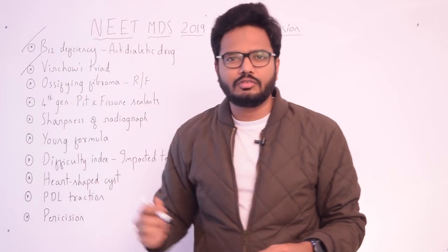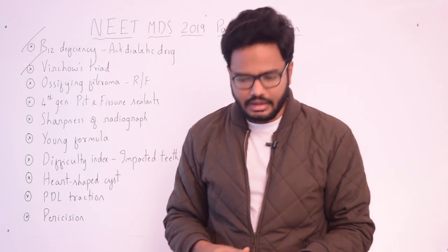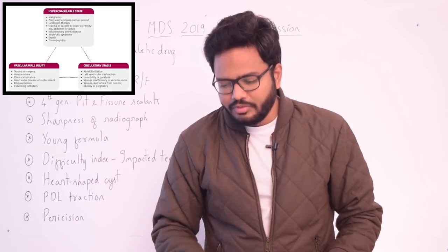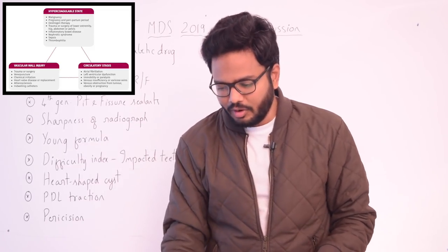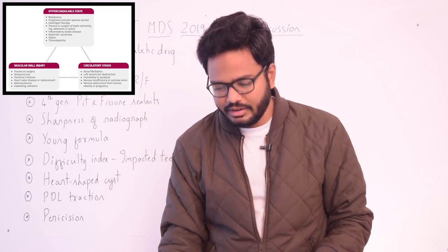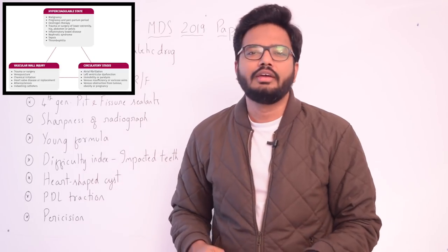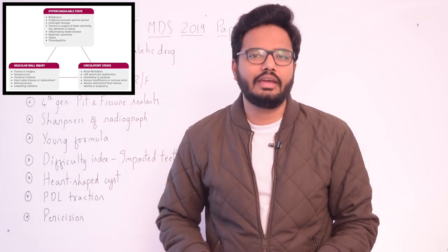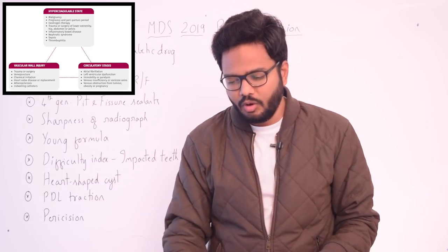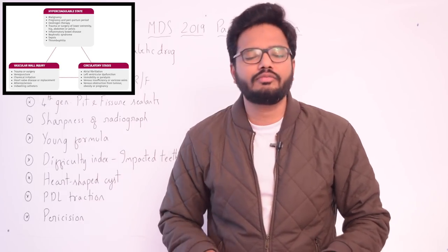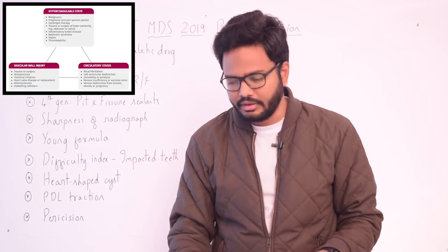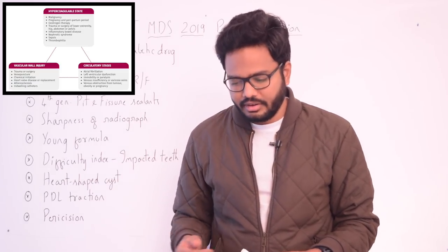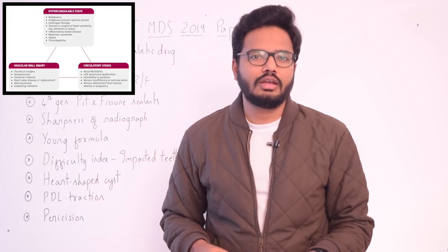Moving on to Virchow's triad, a classic concept we've discussed a number of times. About 150 years ago, German pathologist Rudolf Virchow postulated that thrombus formation and propagation resulted from abnormalities in three key areas: flow, vessel wall, and blood components. These three factors — hypercoagulable state, circulatory stasis, and vascular wall injury — are known as Virchow's triad.